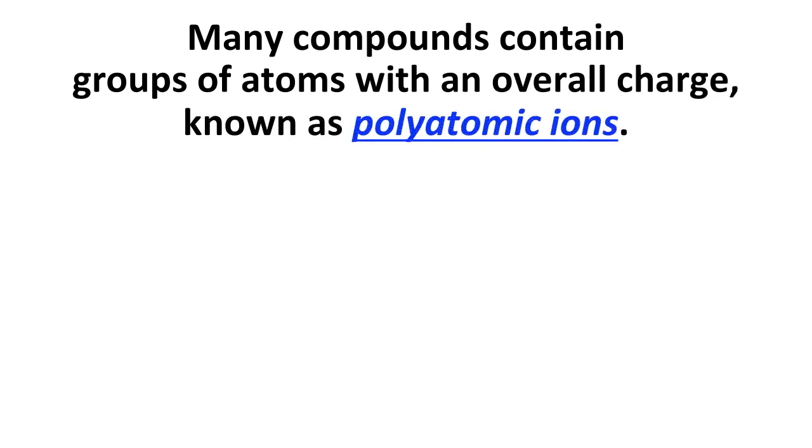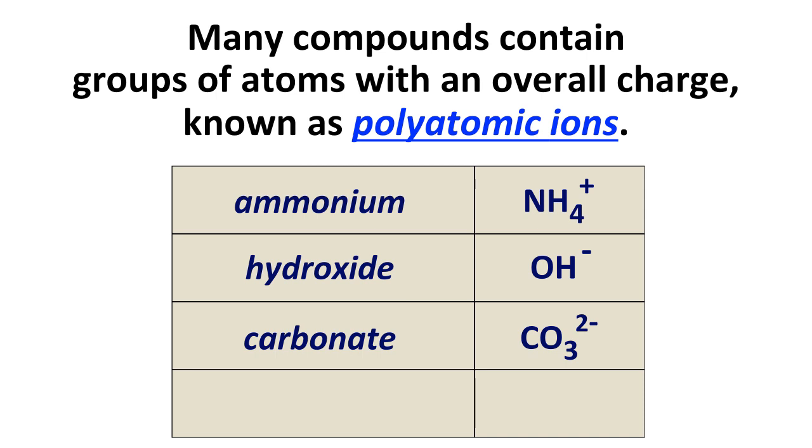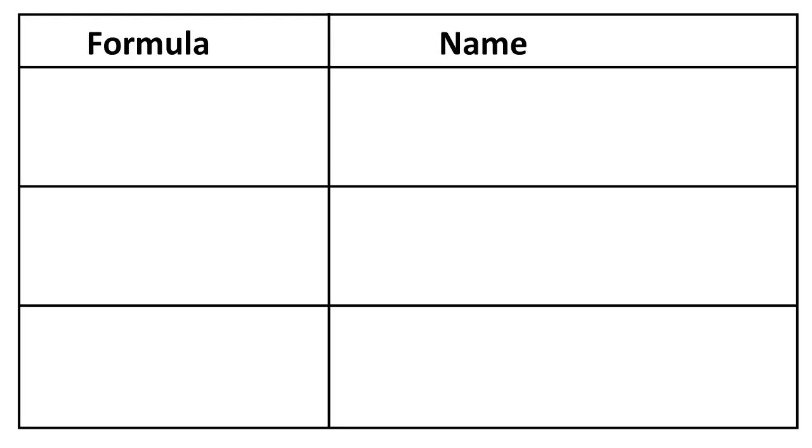We can also have compounds that contain groups of atoms that have an overall charge. These are known as polyatomic ions. There are a lot of them. There's a number of common ones you're probably going to want to learn. I'll mention a few here. Ammonium ion is NH4 plus, one nitrogen, four hydrogens all bonded together, and an overall charge of plus one for the whole grouping of atoms. Hydroxide is OH minus. Carbonate is CO3 2 minus. Phosphate is PO4 3 minus. There are other ones that you should get familiar with, but these are some examples.